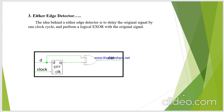And finally, the either edge detector. It will detect either positive edge and negative edge at the same time. The idea behind the either edge detector is to delay the original signal by one clock cycle and perform the logical XOR operation with the original signal.